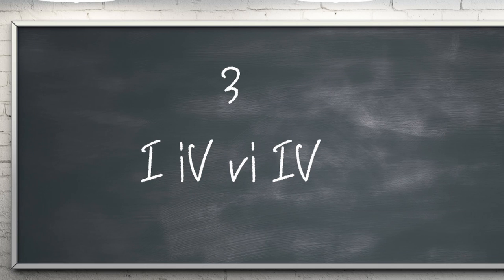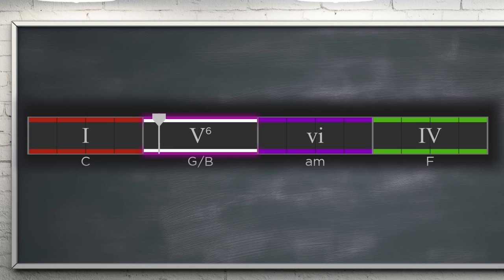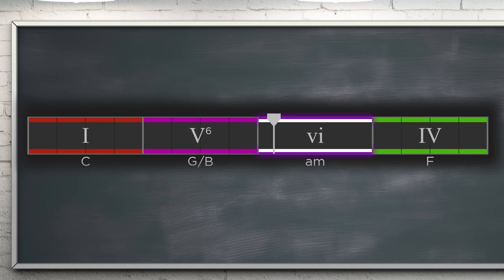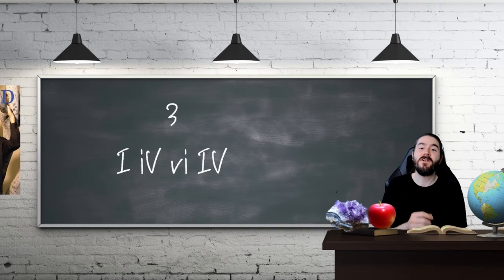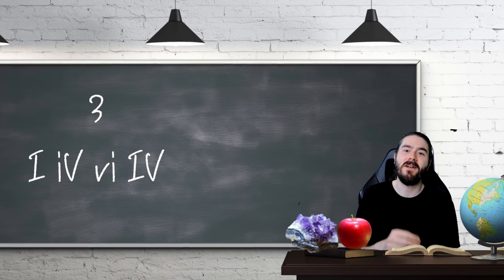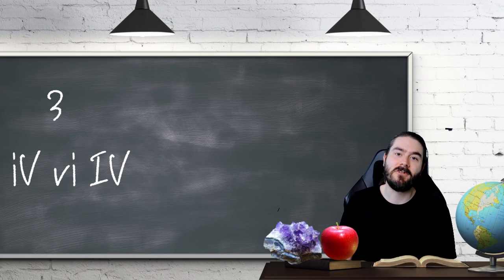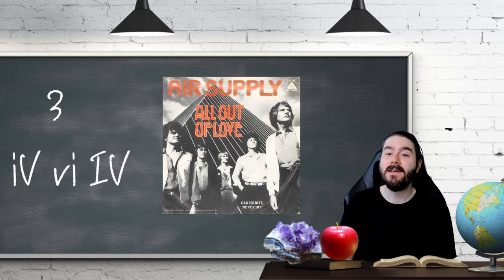Close to the top now at number 3, it's 1, 1st inversion 5, 6, 4. The first inversion 5 chord provides a pleasing downward step to the minor 6 chord in this familiar progression. Examples include Can You Feel The Love Tonight by Elton John and All Out Of Love by Air Supply.